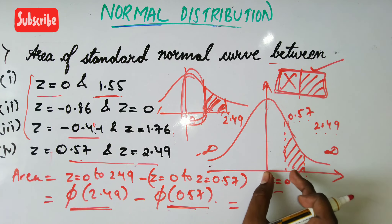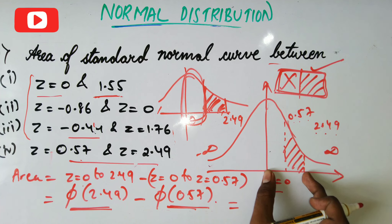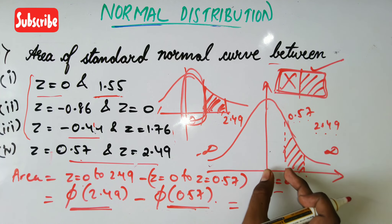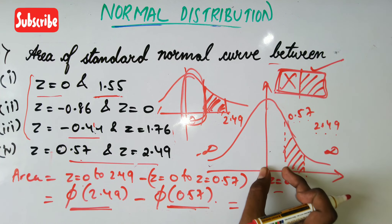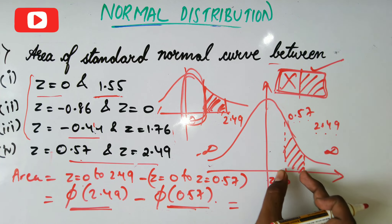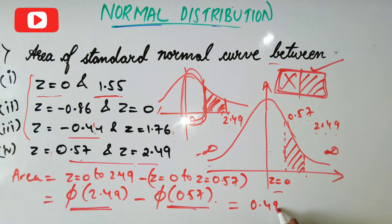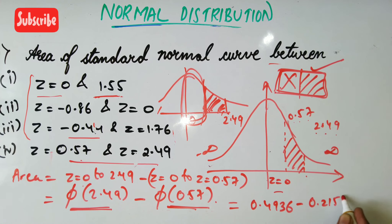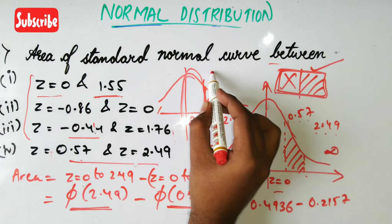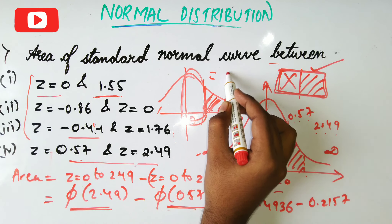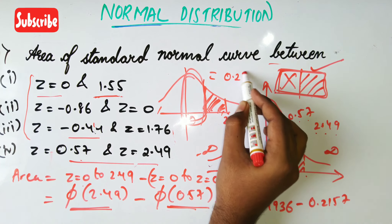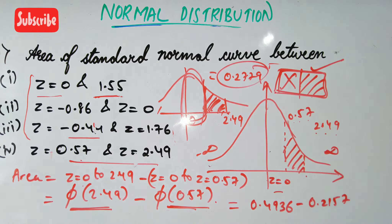φ(2.49) minus φ(0.57) equals 0.4936 minus 0.2157, so the final answer is 0.2779.